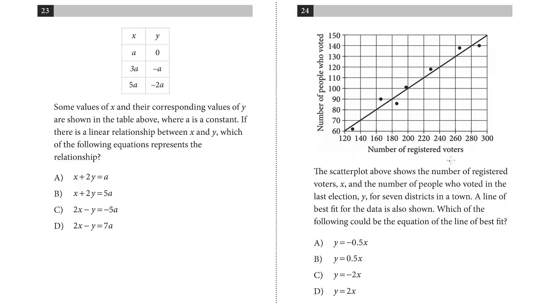The scatterplot above shows the number of registered voters X and the number of people who voted in the last election Y for seven districts in a town. A line of best fit for the data is shown, which of the following could be the equation of the line of best fit?